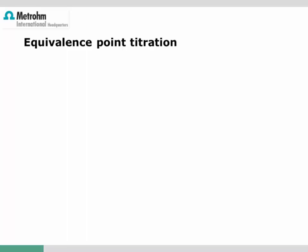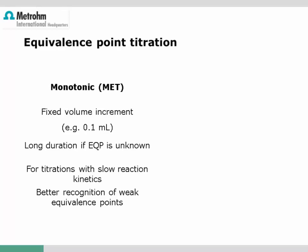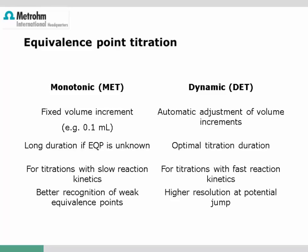Since SET titrations can be very sensitive and require quite some adjustments, nowadays so-called equivalence point titrations are much more common. The titration is done beyond the real endpoint — beyond the equivalence of analyte and titrant — and then evaluated afterwards. We differentiate between two types: the first is the monotonic equivalence point titration (MET mode), where titrant addition is done in equal volume increments, typically around 100 µL per addition. This allows perfect manual control of titration speed and is useful for inhomogeneous sample solutions or when reaction kinetics are very slow. One major disadvantage is the resulting long duration, especially for large titrant volumes.